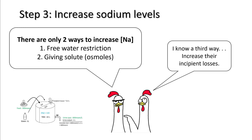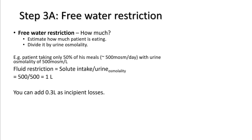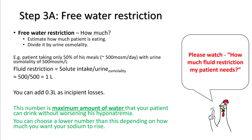Step three is to increase the sodium level, and there are only two ways to do this: either free water restriction or giving solute. For free water restriction, it's very important to estimate how much the patient is eating and know what the urine osmolality is. You can divide these two numbers to get a rough idea about free water restriction. For more details on how to calculate this, please watch my earlier lecture on the topic.